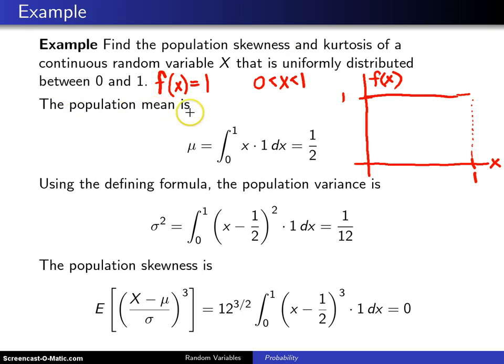So we begin with the population mean. We want μ, and μ is the expected value of X, and that will be the integral over the support of X, which is from 0 to 1, of x multiplied by the probability density function, which is 1 in this case, dx. The integral of x is just x²/2. When you plug in 1 you get 1/2. When you plug in 0 you get 0. So the mean is 1/2.